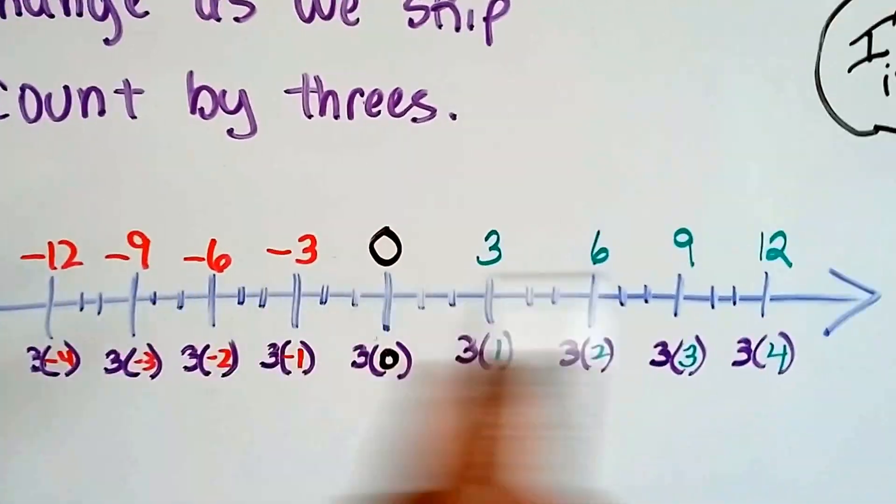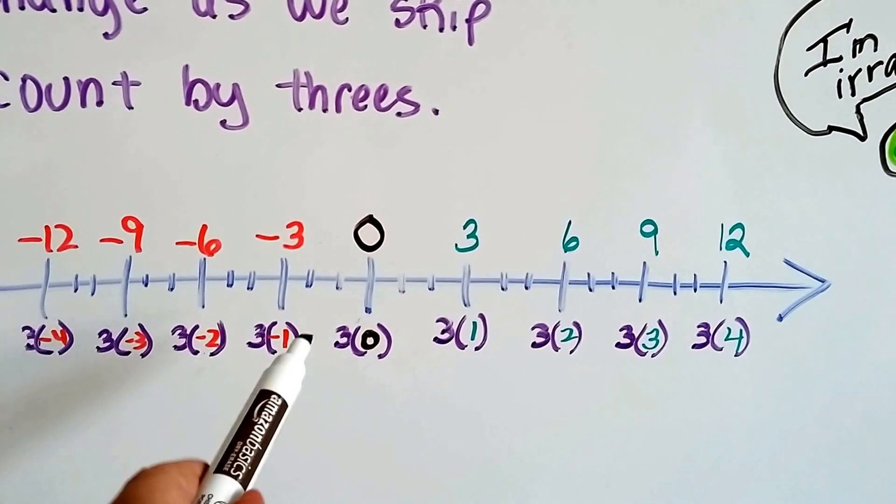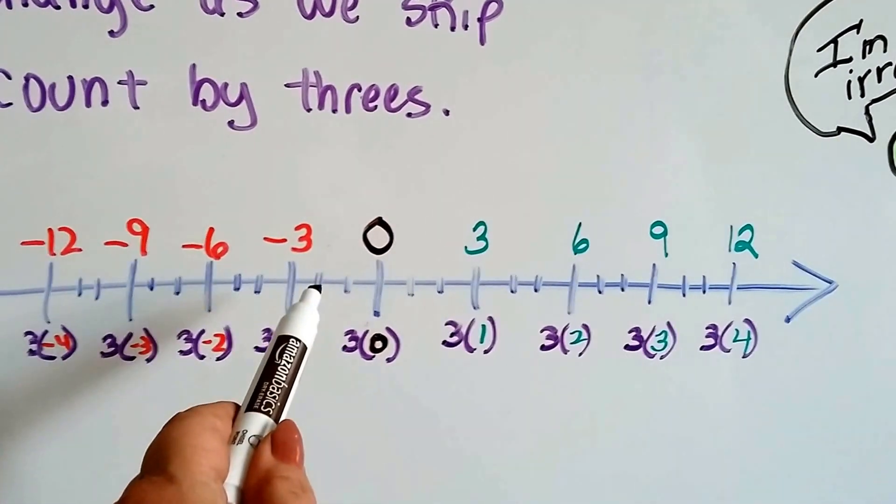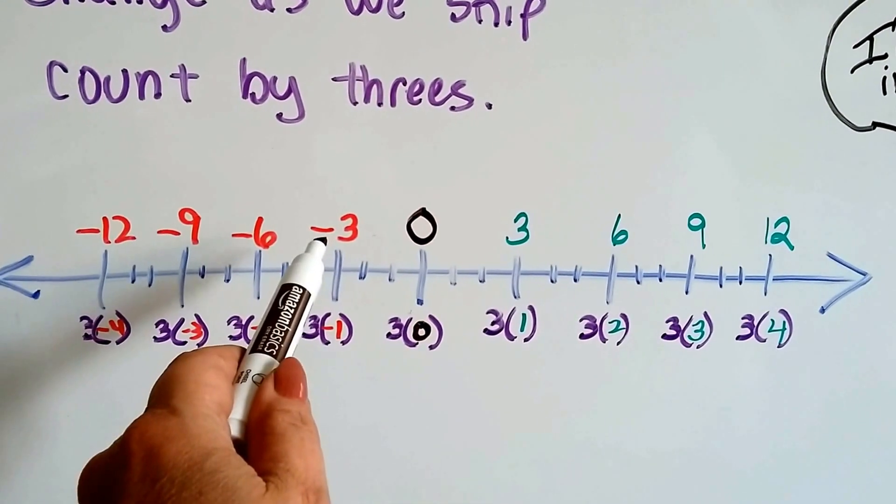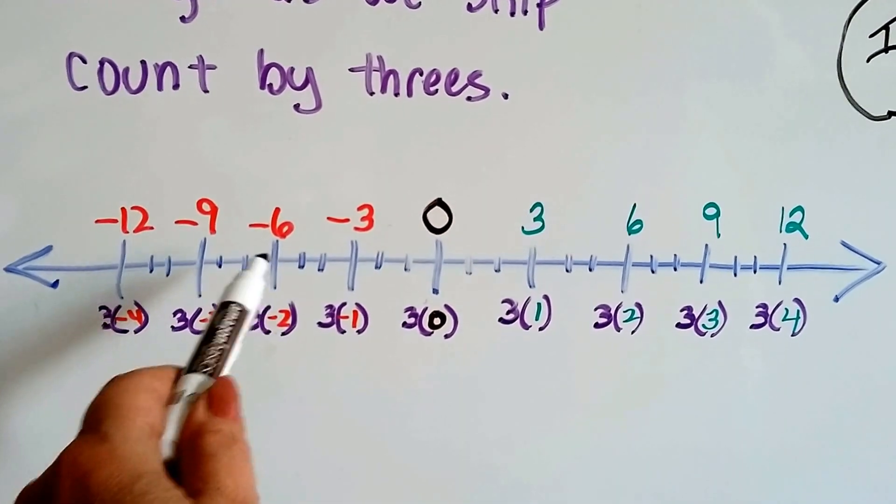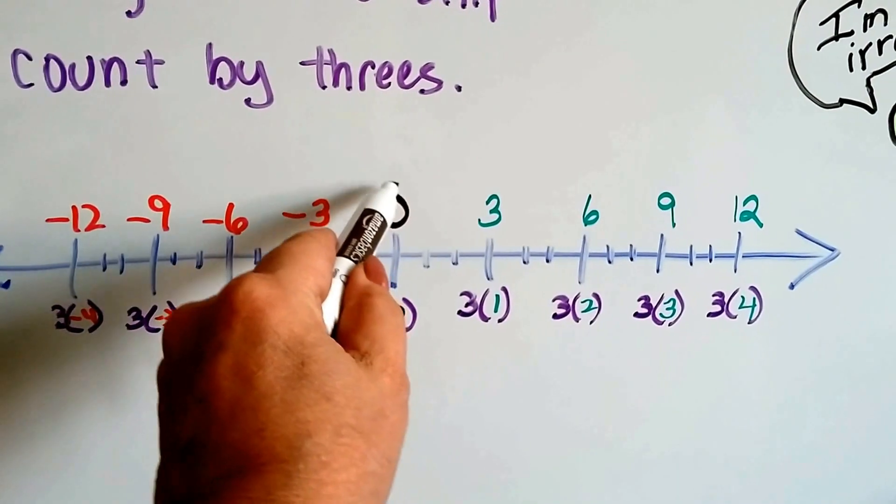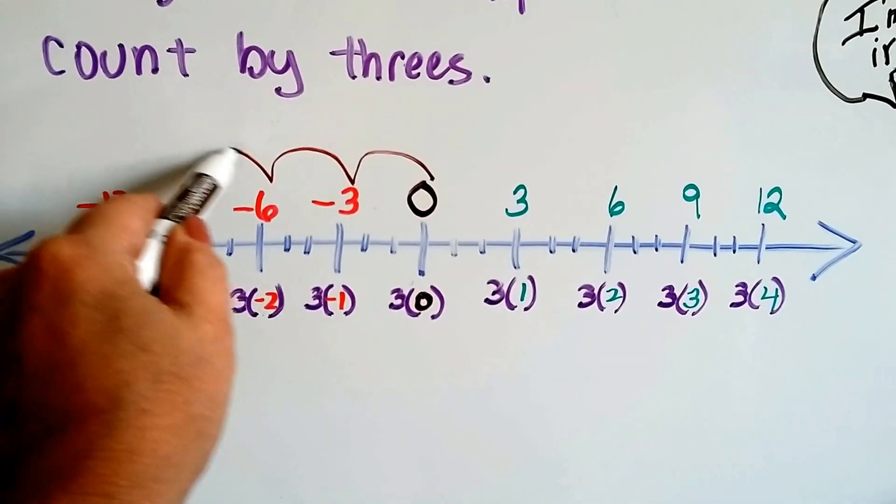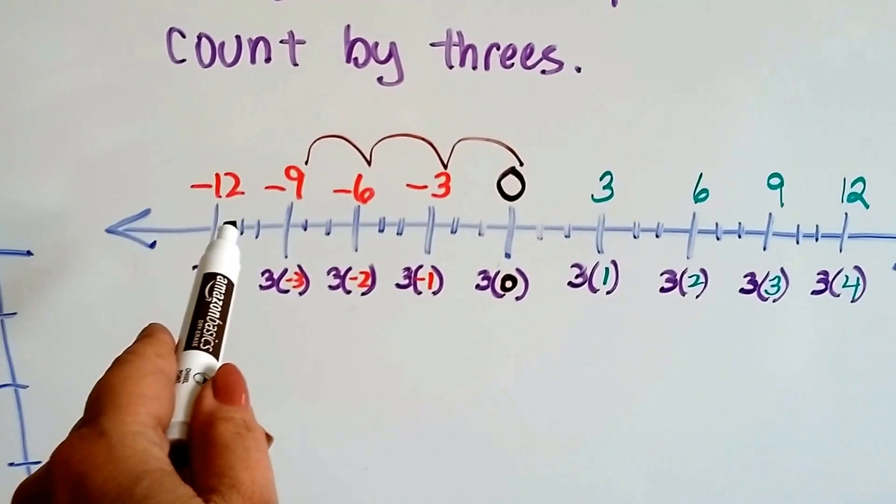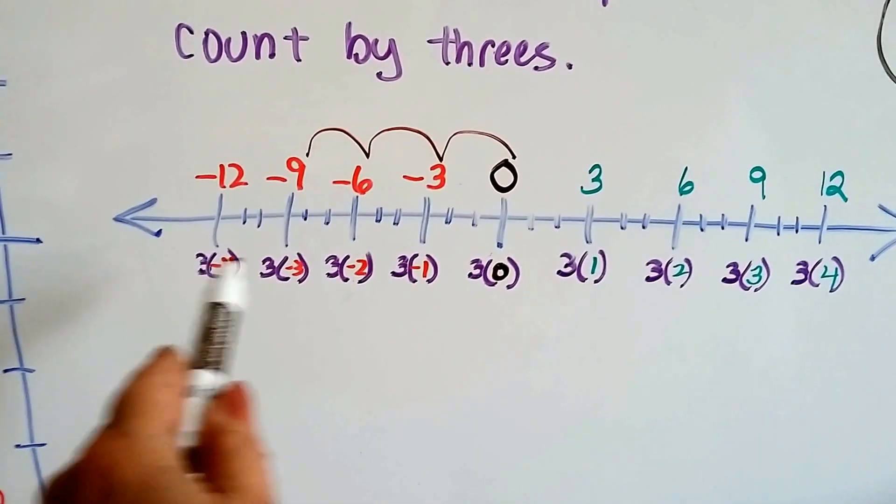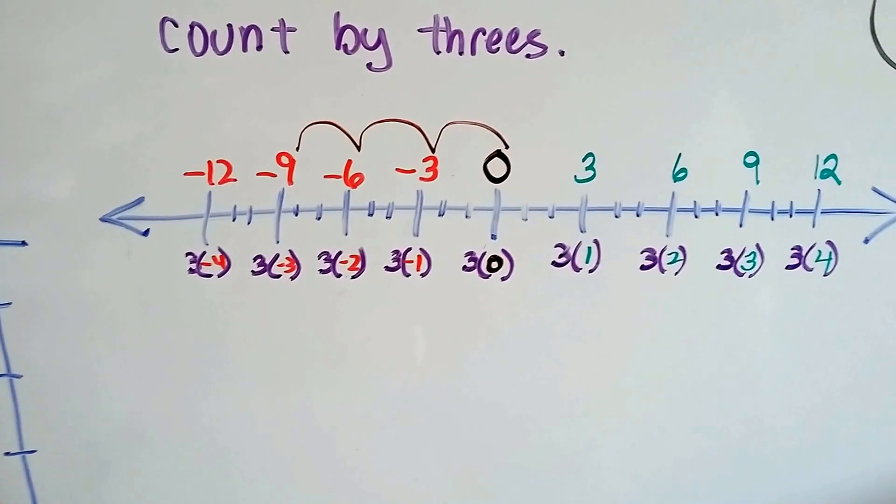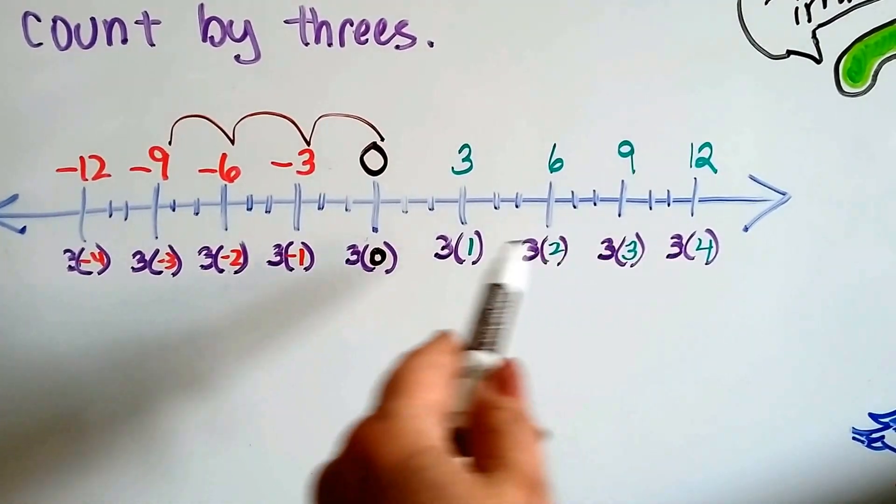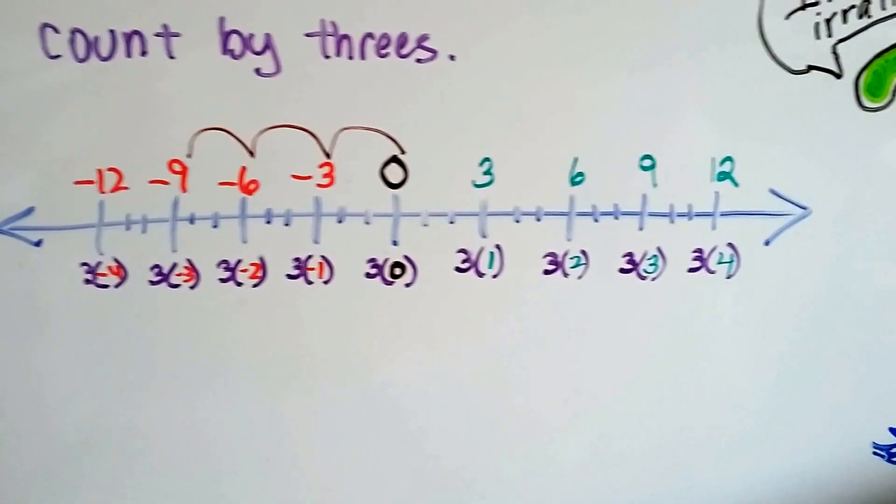So we can see the signs change as we skip count by 3s. So here's our number line laying down like we're used to seeing it. And you can see this would be 1, 2, and then we're at 3. Negative 1, negative 2, negative 3, negative 4, negative 5, negative 6. So as we skip count, we can see, jumping by 3s, how multiplying a positive number to a negative 1 is putting us in the negative. And when we multiply two positives, it puts us in the positive.